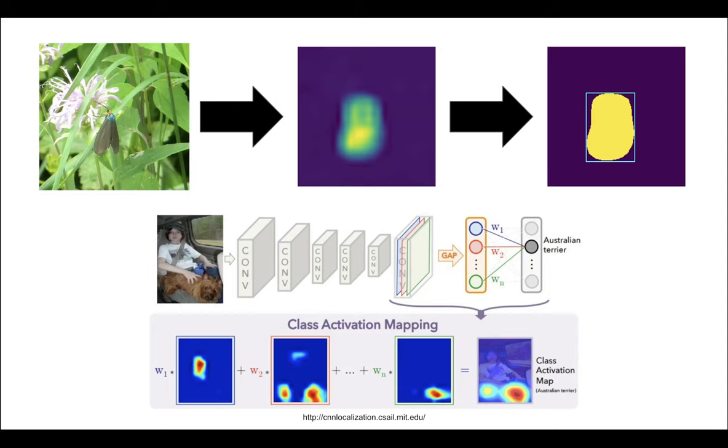Finally, we use standard image processing operations to turn the activation map into a bounding box prediction.